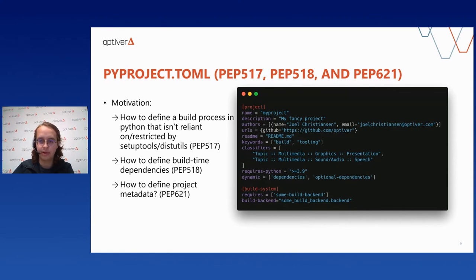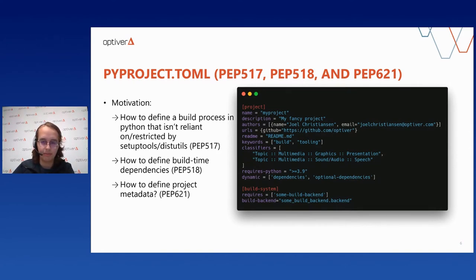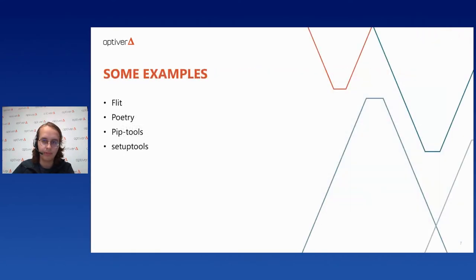These three PEPs together give us a powerful combination: the ability to have build-time dependencies on any library, have the build call any PEP-compliant code, and specify metadata in a way acceptable to any build tool. In practice, PEP 621 was finalized in November and very little supports it yet, but that will almost certainly change over time.